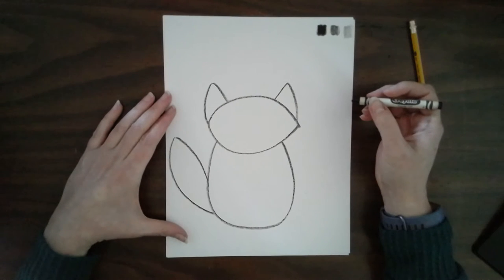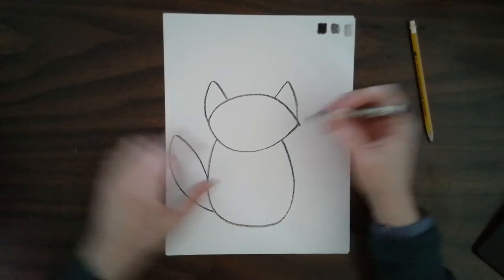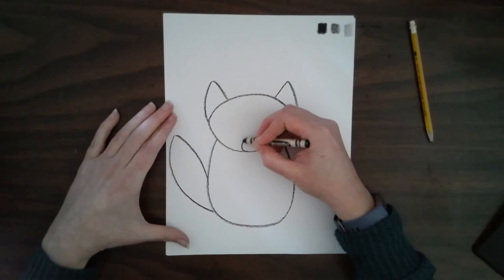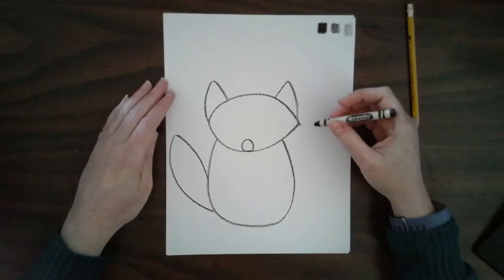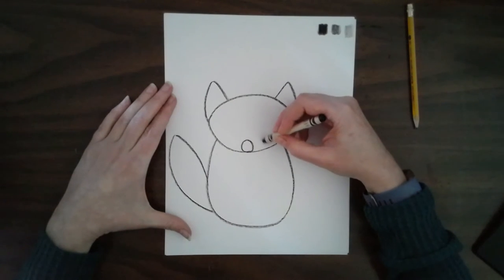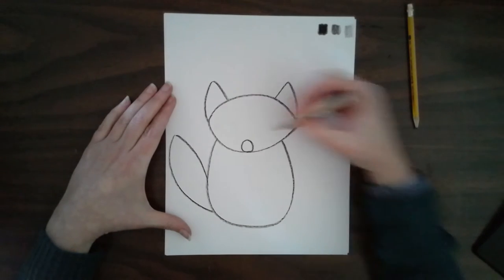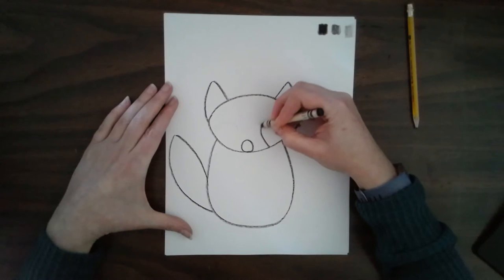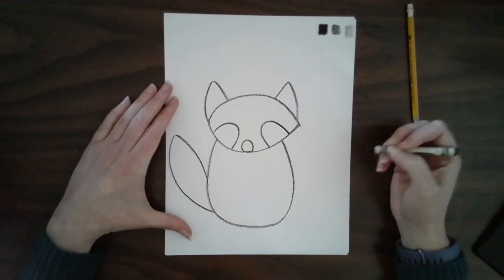Alright, now I'm going to make a little nose for my animal and I'm going to do a little circle right here. Now this animal looks like he's wearing a mask, so I'm going to put a rainbow line right here on each side where the eyes are going to go. Like that.